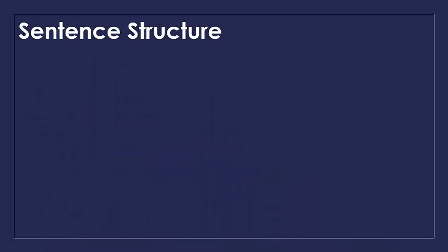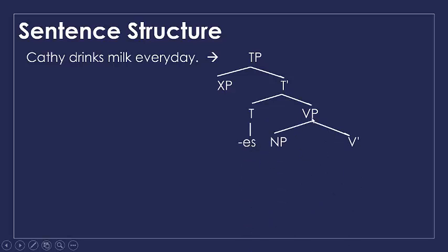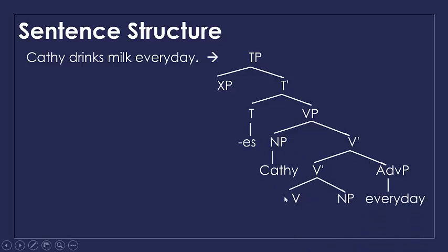Now let's see the structure of the sentence 'Kathy drinks milk every day.' Here we have a TP. The TP branches into XP as a specifier and T-bar. The T-bar branches into T as a head and VP. T here is -ES, present inflection. The VP branches into NP and V-bar. The V-bar branches into another V-bar and an adverbial phrase 'every day.' The NP here is Kathy, and the V-bar branches into V 'drink' and NP 'milk' as the complement.